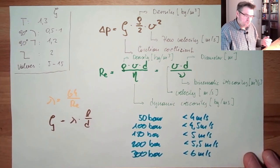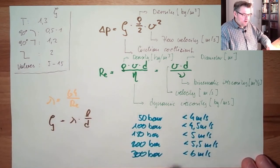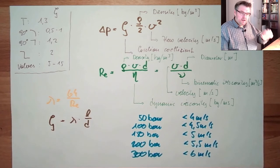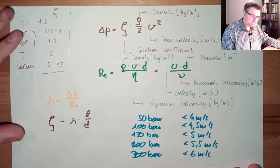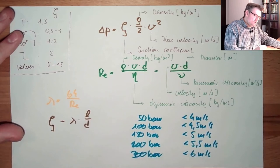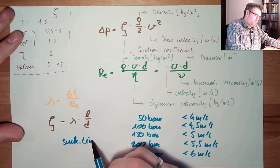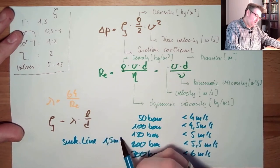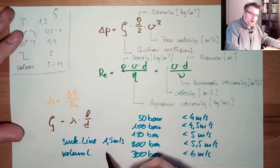These are rule-of-thumb methods. With this average flow velocity, I can already design the diameter of my tube and then calculate the Reynolds number. For the suction line, the flow velocity is about 1.5 meters per second, and for the return line we have 2 meters per second, because here there shall be no pressure — in fact it can be below atmospheric pressure.